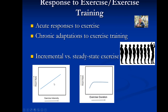When talking about acute responses, we generally discuss incremental or steady-state exercise. Incremental exercise is where the intensity gets harder and harder, and we can see that heart rate increases linearly with exercise intensity. Steady-state exercise is exercise where the intensity remains constant — for example, running at five miles per hour on a treadmill, where heart rate rises and then plateaus at a steady state.